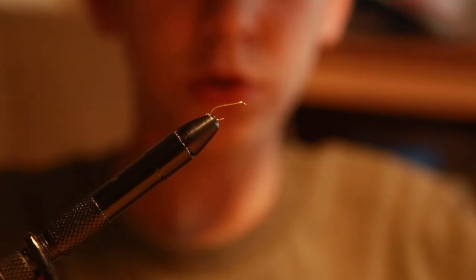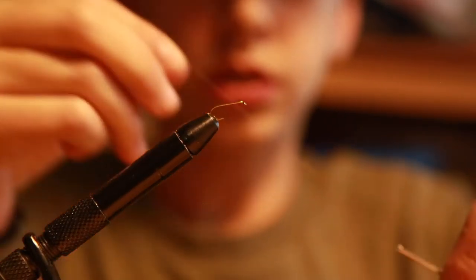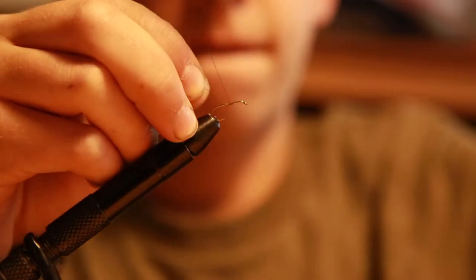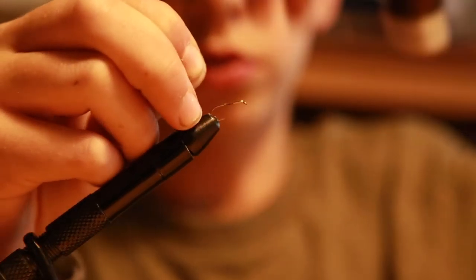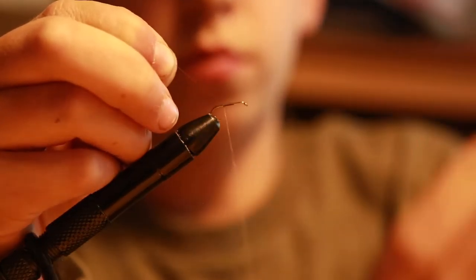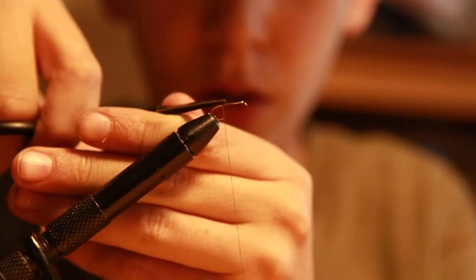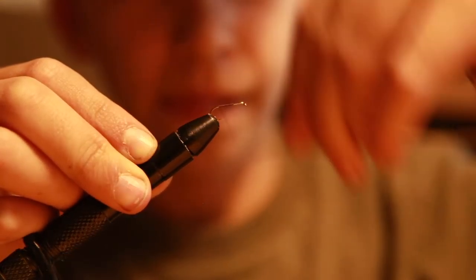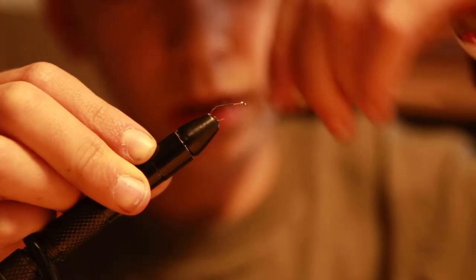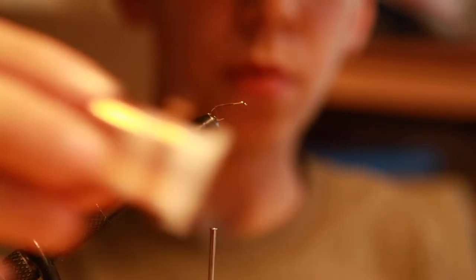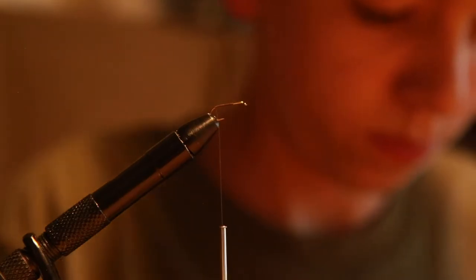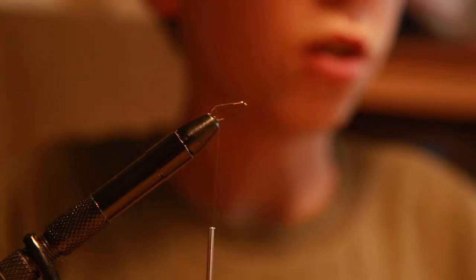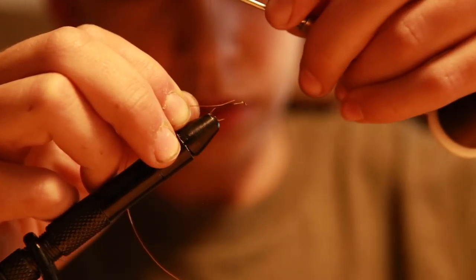For hook size I'm using a normal size 16. For thread I'm using UTC 70 denier, my favorite thread. I use brown but you can use black or whatever color you want, though black or brown is most common. Cut the tag end there. Stop there and get out your copper wire. Cut probably five inches to be safe on a size 16.